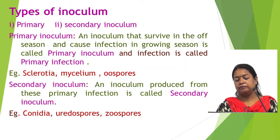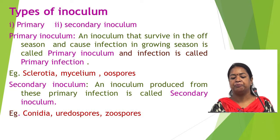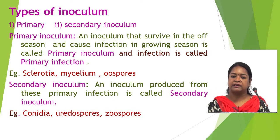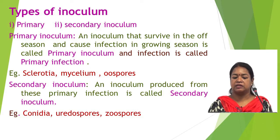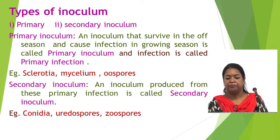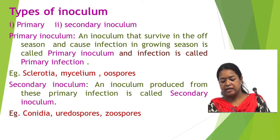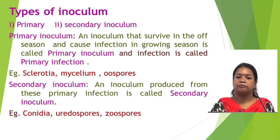There are two types of inoculum: primary inoculum and secondary inoculum. An inoculum that survives in the off-season and causes infection in the growing season is called primary inoculum. Sclerotia, mycelium, and oospores are primary inocula of the pathogen. Whereas an inoculum produced from primary inoculum is called secondary inoculum. Conidia, uredospores, and zoospores are the secondary inocula of the pathogen.